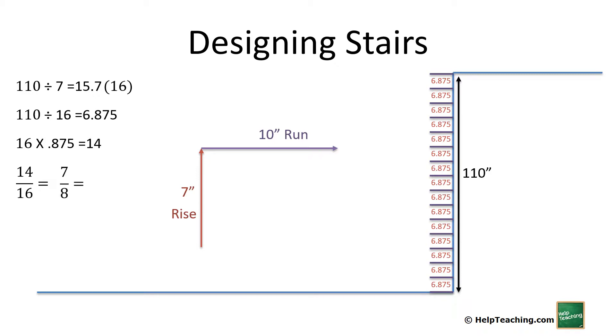We can double check ourselves. 7 divided by 8 is 0.875. So this means that our rise is actually going to be 6 and 7 eighths of an inch. That will give us an even amount of steps so it comes out right at the top.